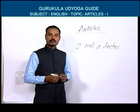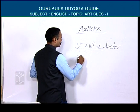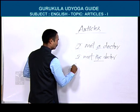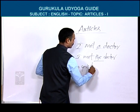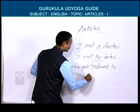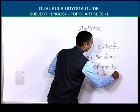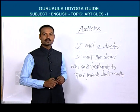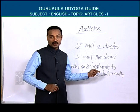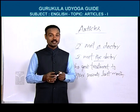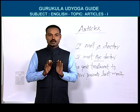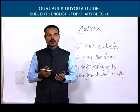Now one more example for definite article: 'I met the doctor who gave treatment to your parents last month.' This sentence is giving us definite meaning — a particular doctor is identified. That is why the is called definite article. So friends, you now know how many articles there are and why we call them definite and indefinite.